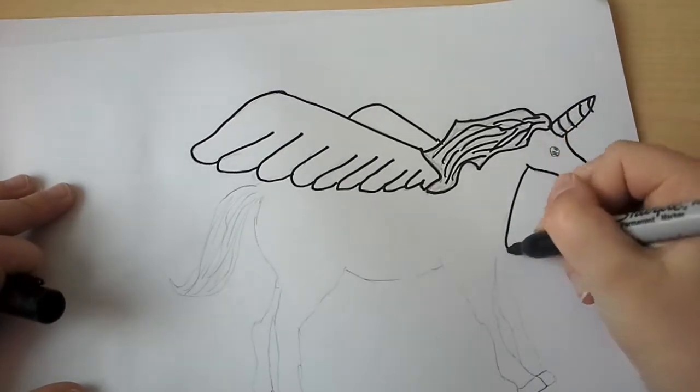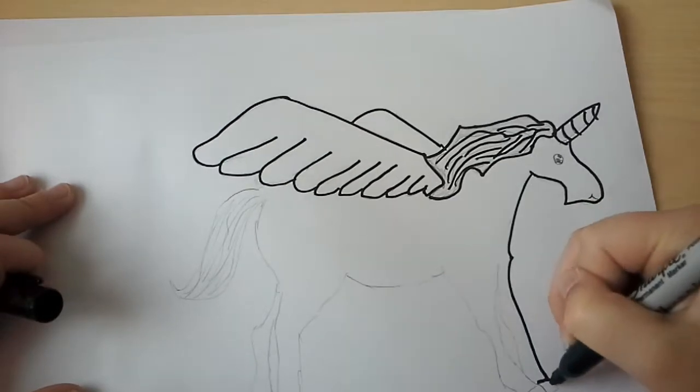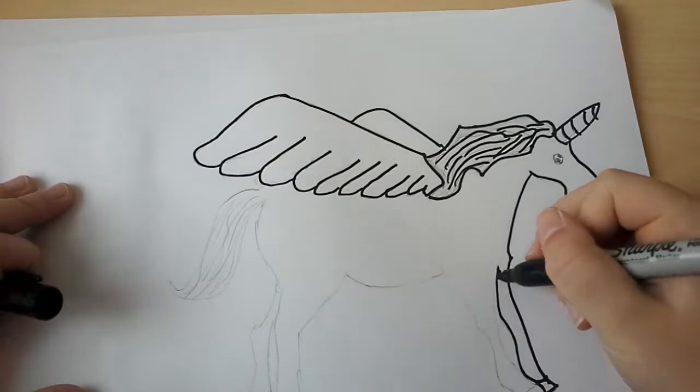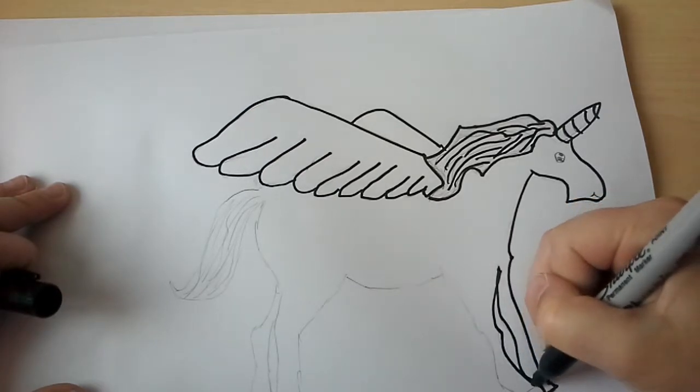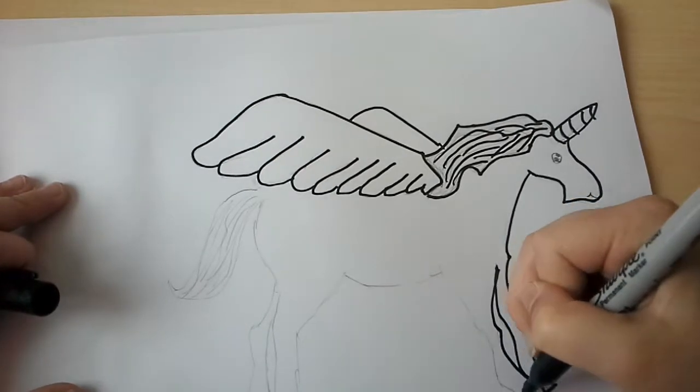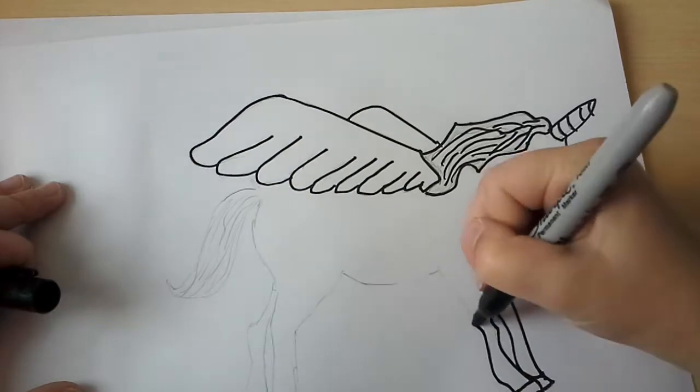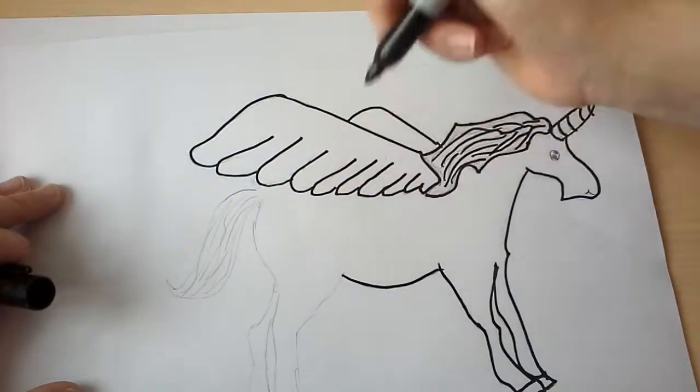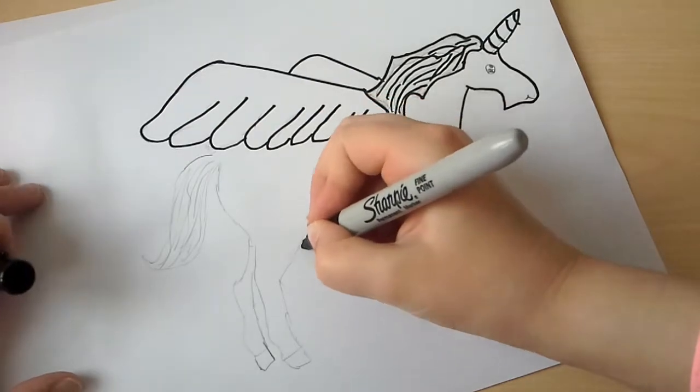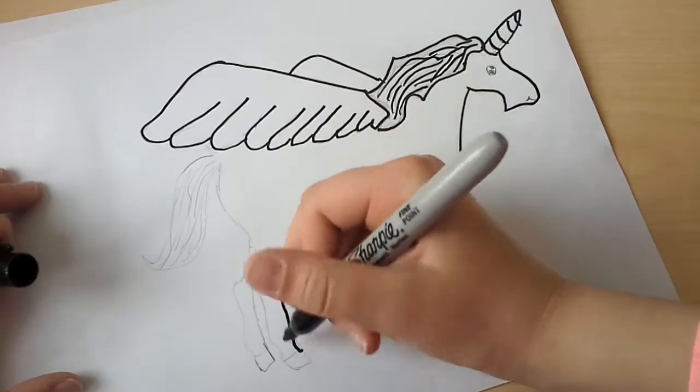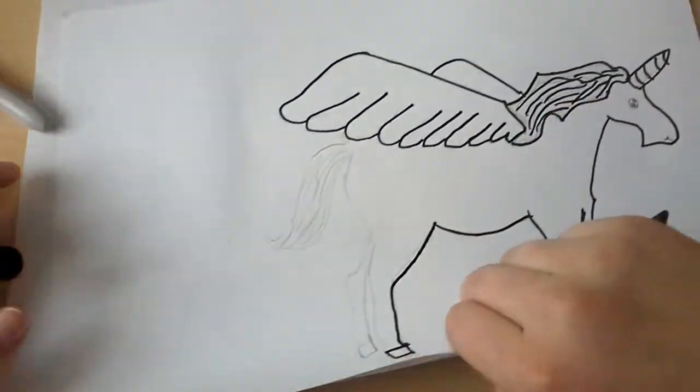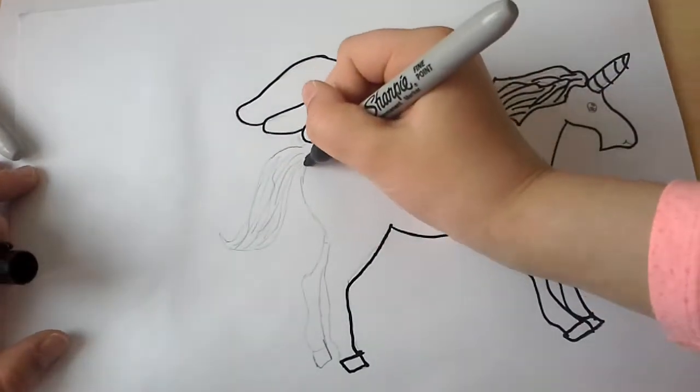And I actually just decided that I would outline everything with a black pen because I think then it will stand out better. So I'm just doing that. And guys, comment down below if you want me to do a tutorial on how to draw this unicorn or other things.